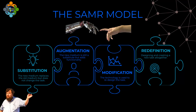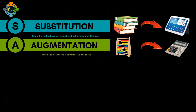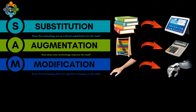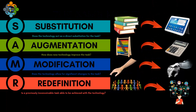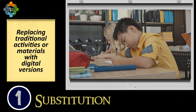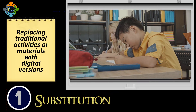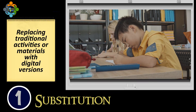The four tiers are presented roughly in order of their sophistication and transformative power: number one, Substitution; number two, Augmentation; number three, Modification; and number four, Redefinition. Let's break down each level with real-life applications.